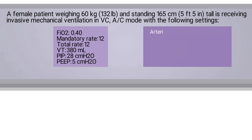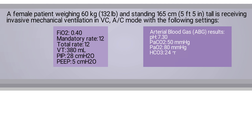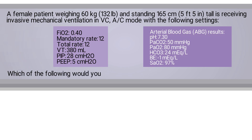Her ABG results are as follows: pH of 7.3, PaCO2 of 50, PaO2 of 80, bicarb of 24, base excess of negative 1, and an SaO2 of 97%. Which of the following would you recommend?